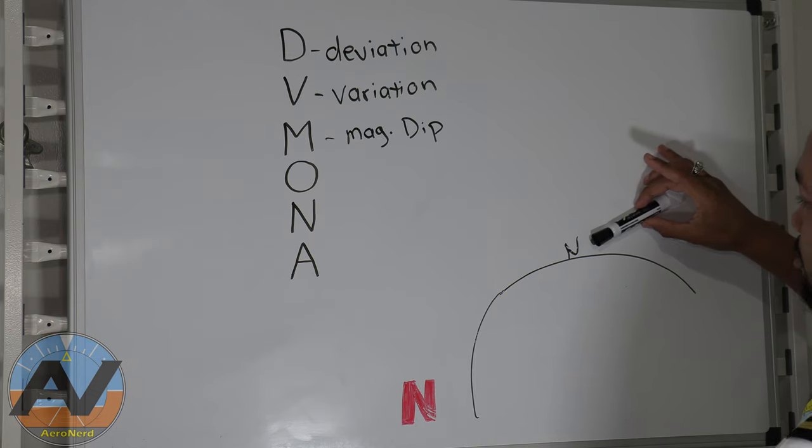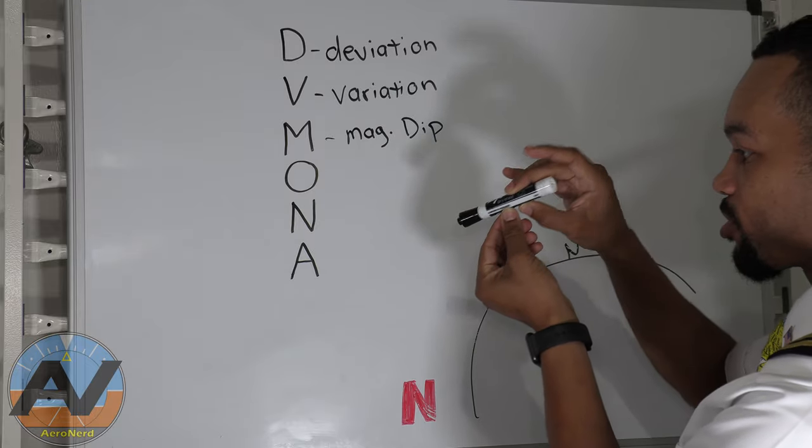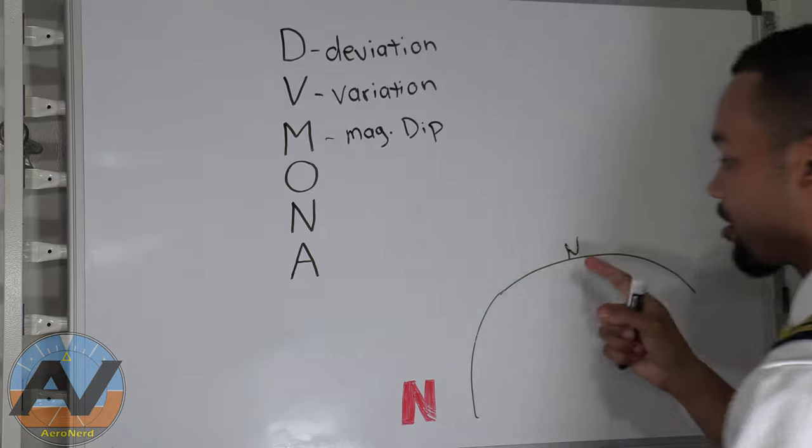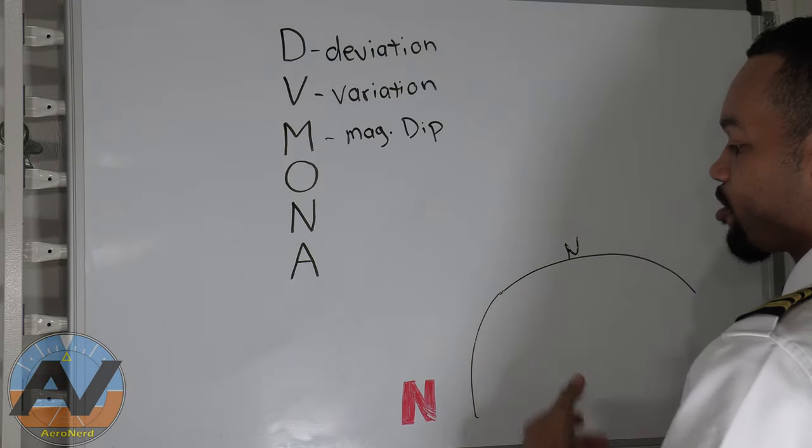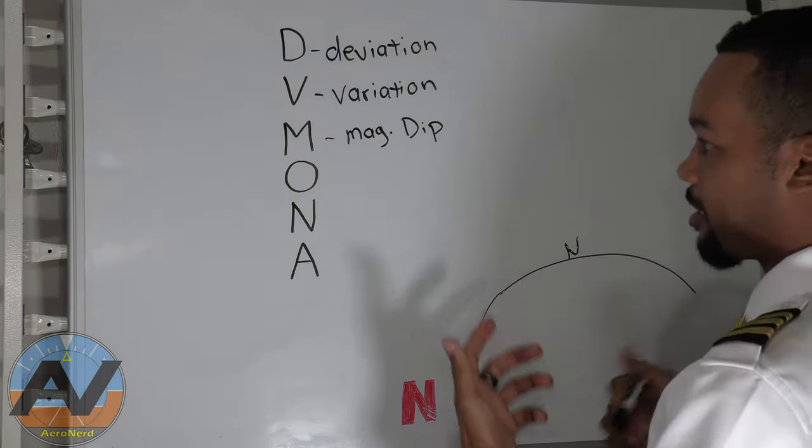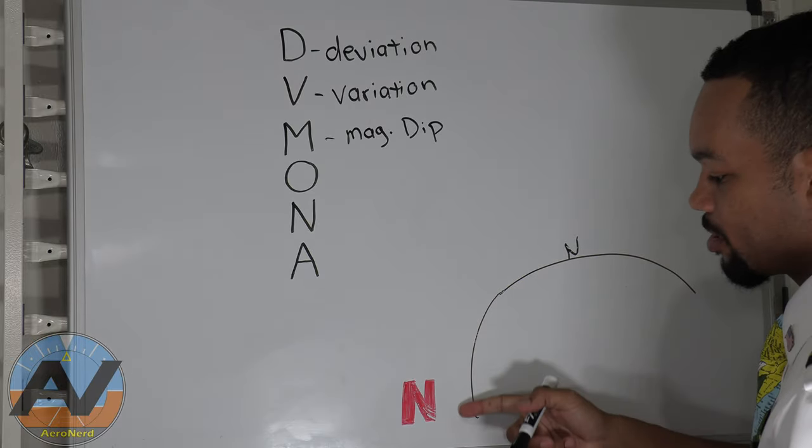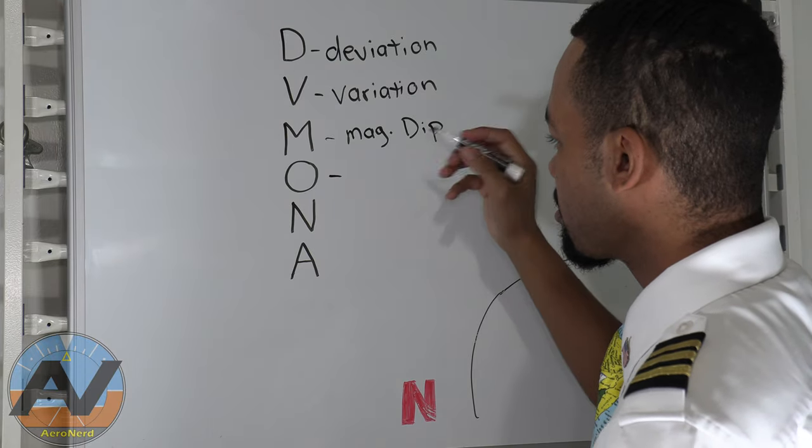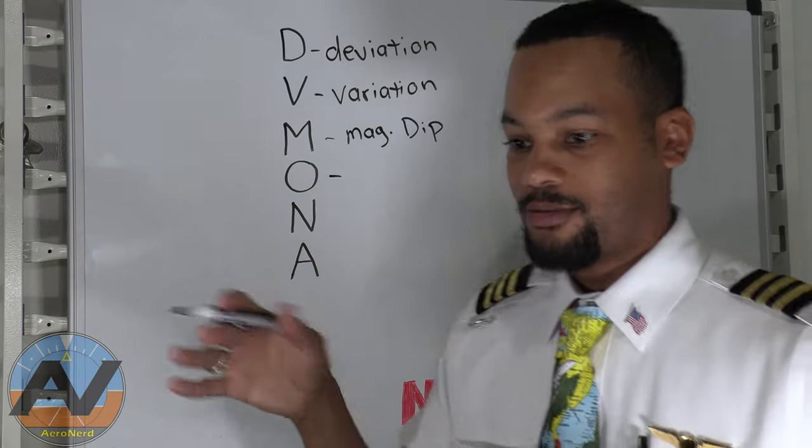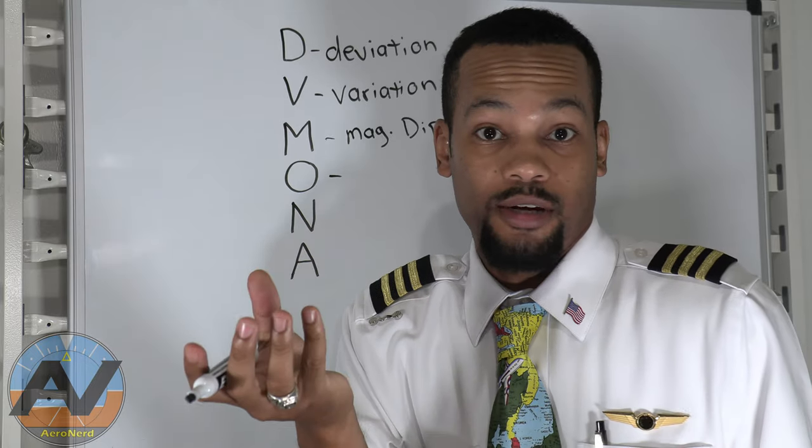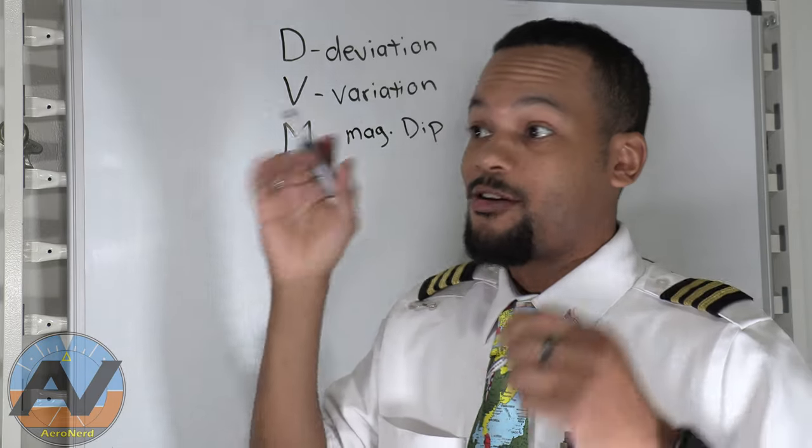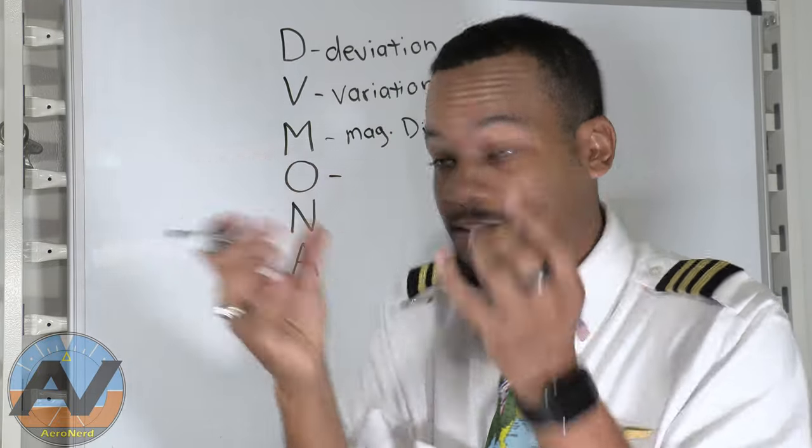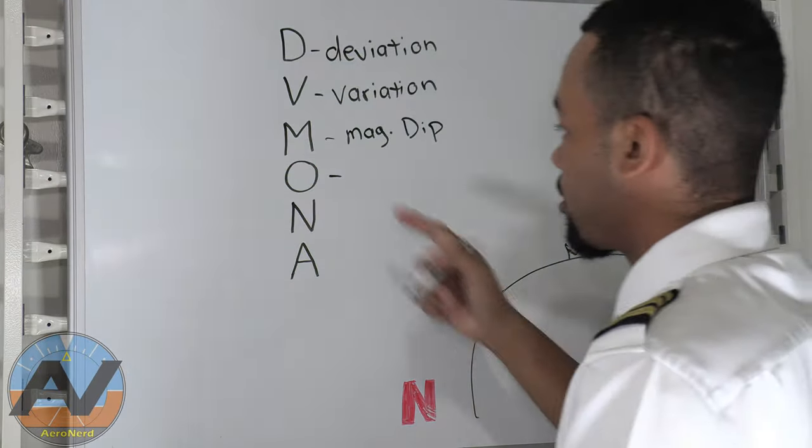Now what this is also going to do is it's actually going to interfere with the turning and twisting. So when you're actually turning, you have a little bit of error there because of the magnetic dip. The further north you are, the more aggressive that magnetic dip error is going to be. When you're in the equator, it doesn't really have that much effect. Oscillation is literally when the compass is sitting in a bowl of kerosene pretty much.